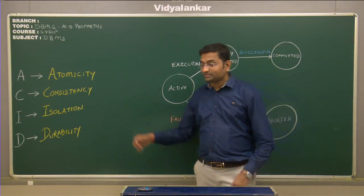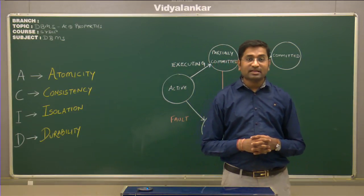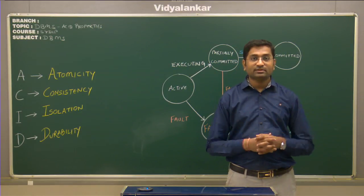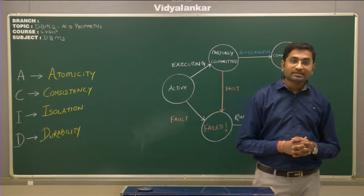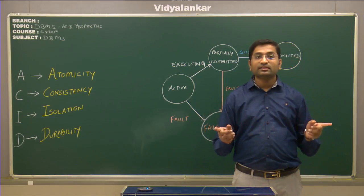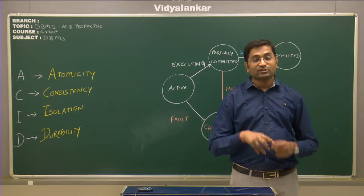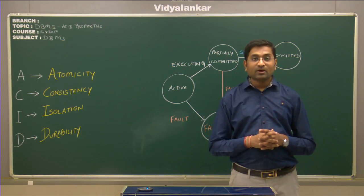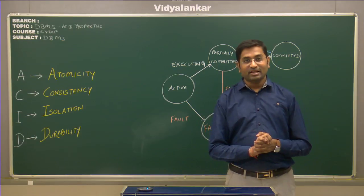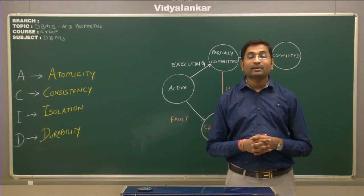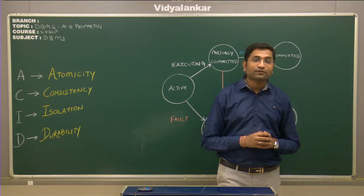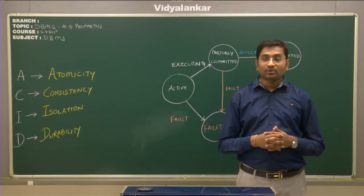The third property is isolation. This property is necessary when multiple transactions may be simultaneously running on the database. For example, there may be two ATM machines located beside each other, and two different customers may be withdrawing cash from their respective accounts simultaneously. So there are two transactions going on at the same time. One transaction should not be able to figure out any details about the other transaction, meaning both transactions should be completely isolated from each other. This property is known as isolation and it is the responsibility of every relational database management system to ensure these properties.